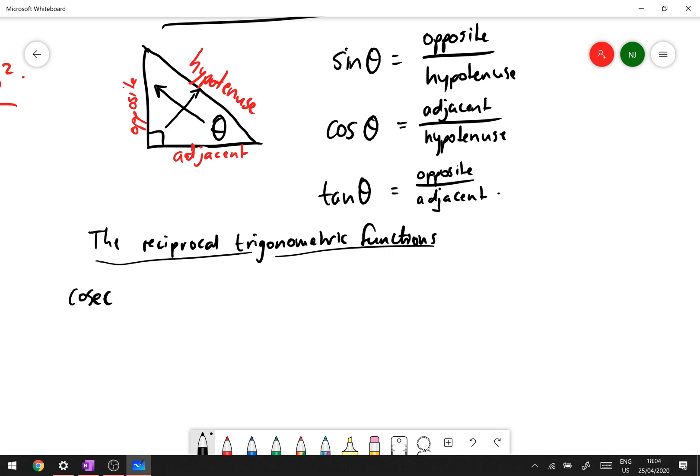So we'll start off with the first one which is called cosec. So basically cosec is just one over sine of theta, or in other words cosec is the hypotenuse over the opposite, so the reciprocal of sine.